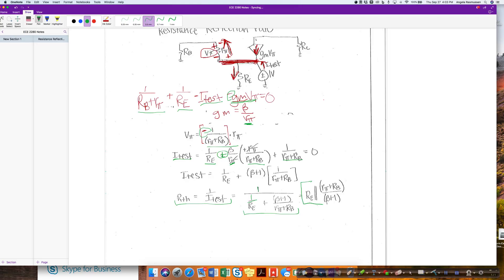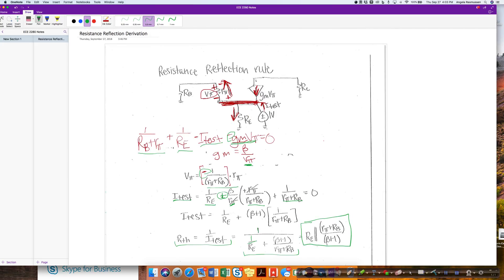And that can be described as these two quantities in parallel. What that means is that whenever I have now the same configuration and I'm located at my emitter side, I can say let me divide all of my base resistors by beta plus 1.